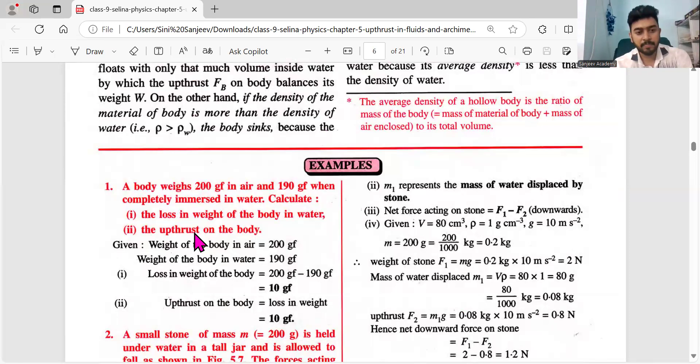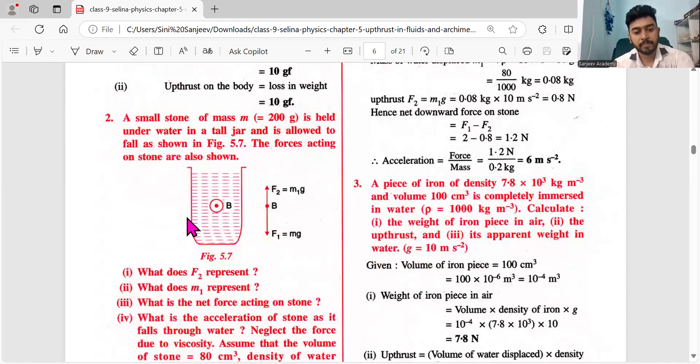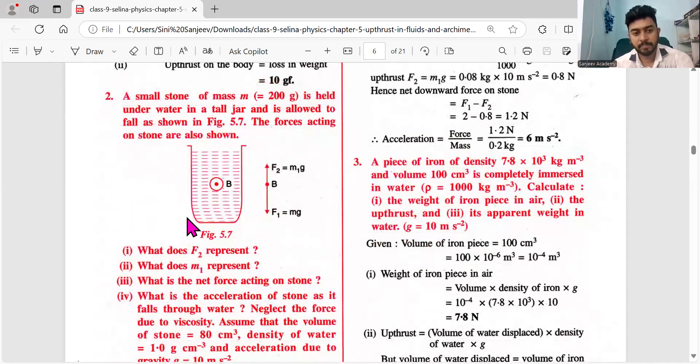The first question: a body weighs 200 gf in air and 190 when completely immersed in water. Calculate the loss in weight of the body in water. In air, the weight is 200, and 190 in water. Loss of weight is 10, common sense 200 minus 190. Then Uptrust is 10 grams. So Uptrust is basically the loss in weight of the body.